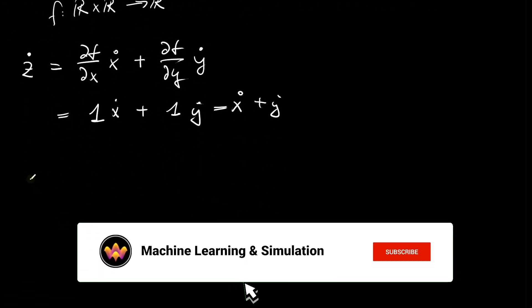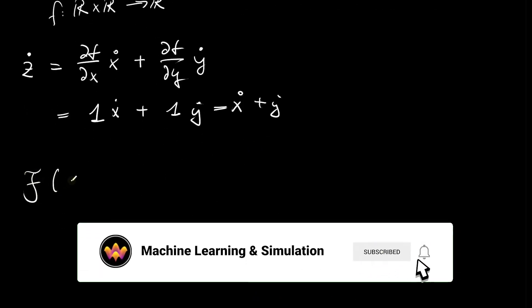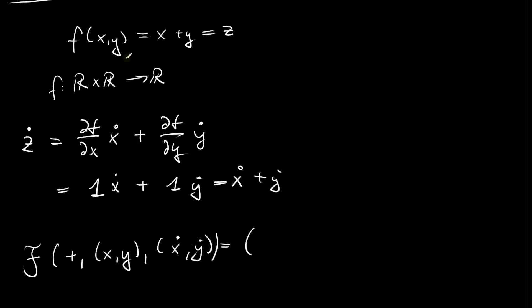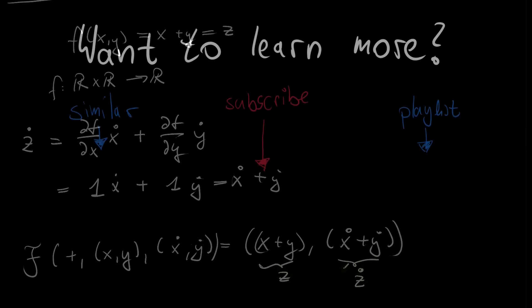In total we can then write down the push forward rule of addition on the input arguments x and y and the input tangent x prime and y prime to be given by first the application of the original addition which is x plus y and then the rule for the tangent propagation which gives us x dot plus y dot. So this one is equal to z and that one is equal to z dot.